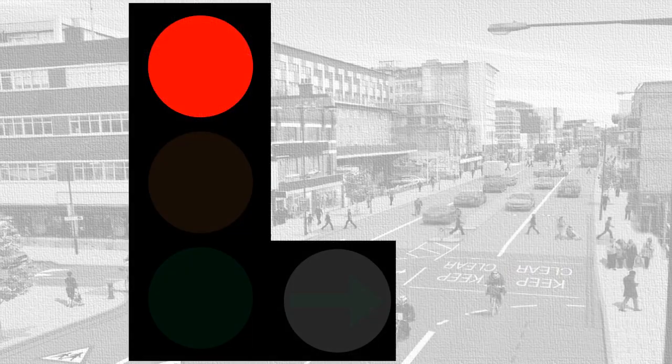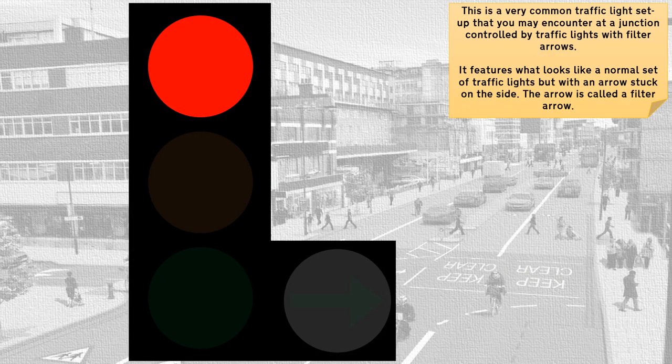This is a very common traffic light setup that you may encounter at a junction controlled by traffic lights with filter arrows. It features what looks like a normal set of traffic lights but with an arrow stuck on the side. The arrow is called a filter arrow.